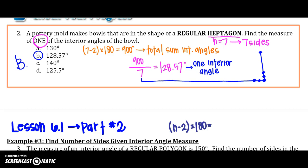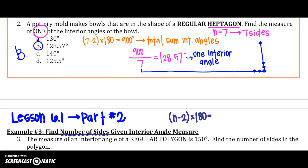We have gone through two different types of problems that you might see and here is the third. We need to find the number of sides now. Instead of finding angles, now we're finding the number of sides given an interior angle measure. So how would we do this? Our problem, the measure of an interior angle of a regular polygon is 150 degrees. Find the number of sides in this polygon.